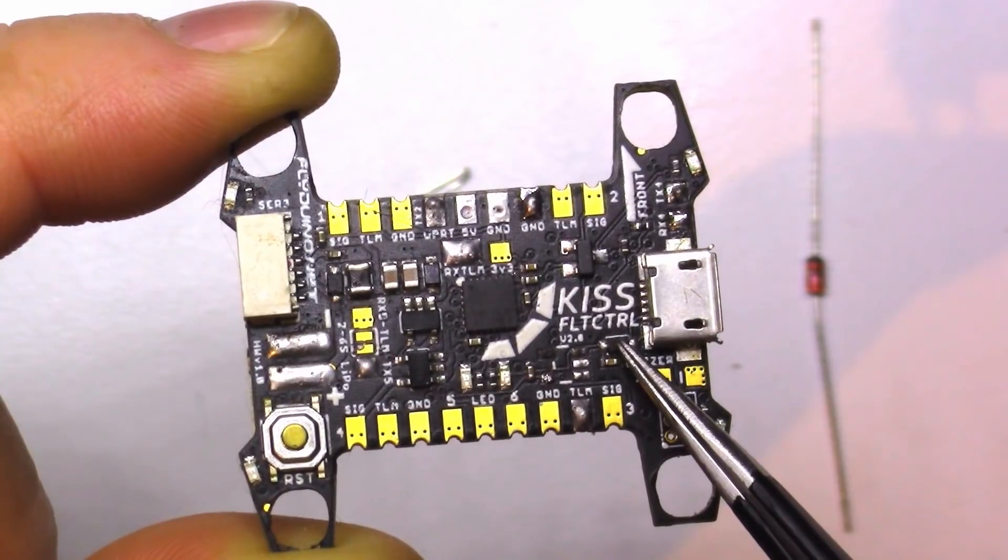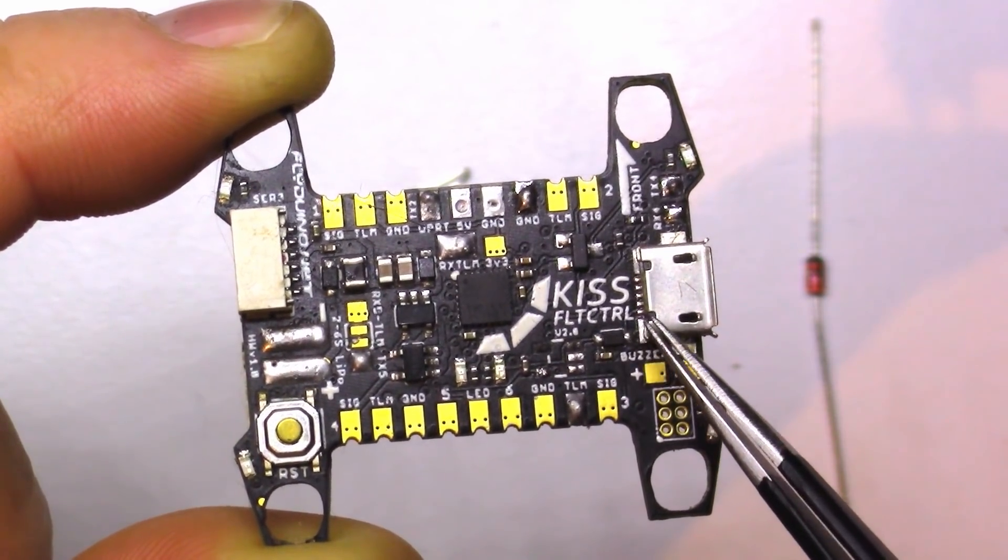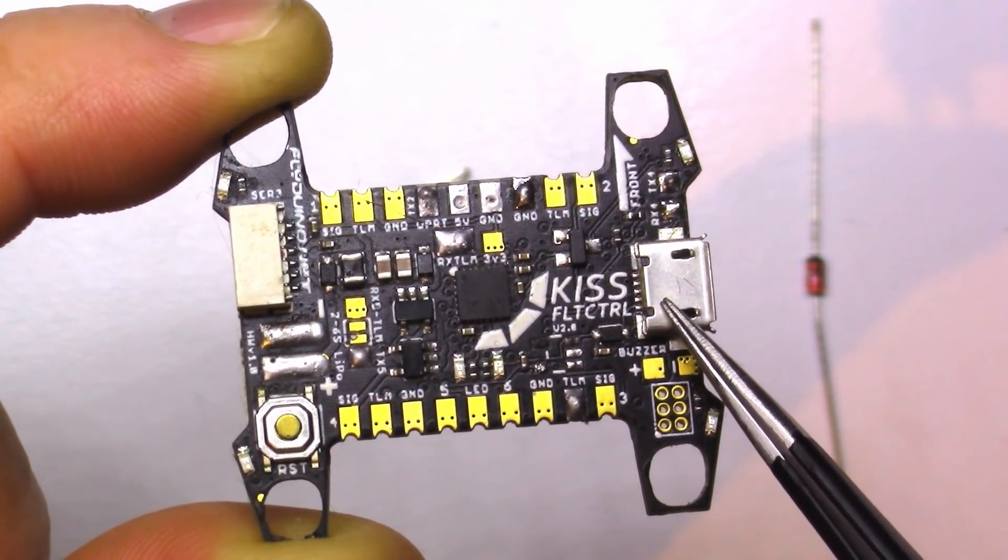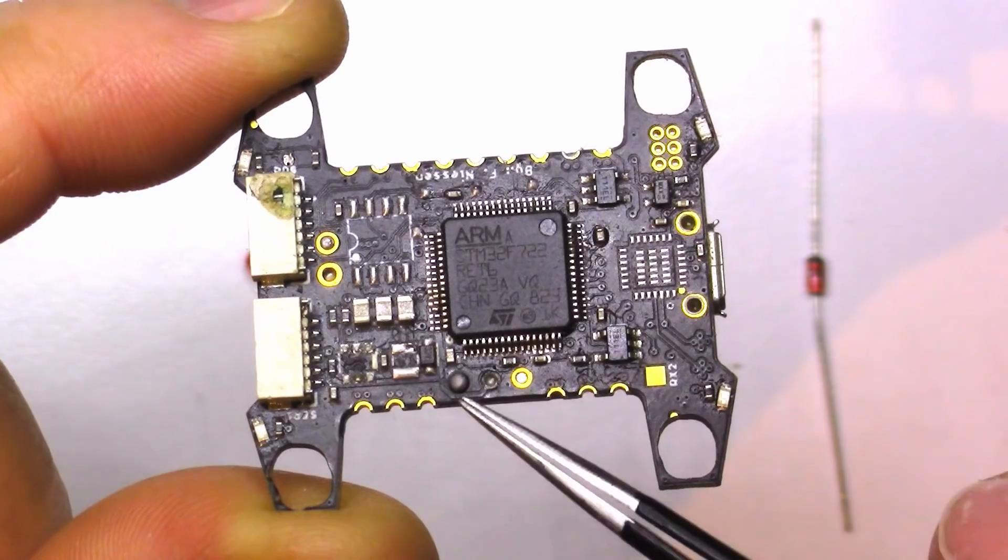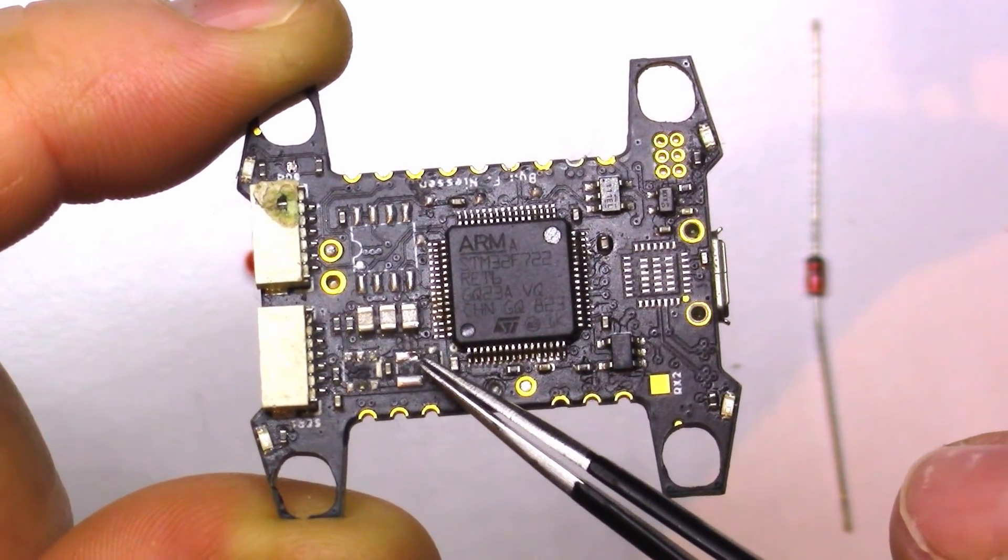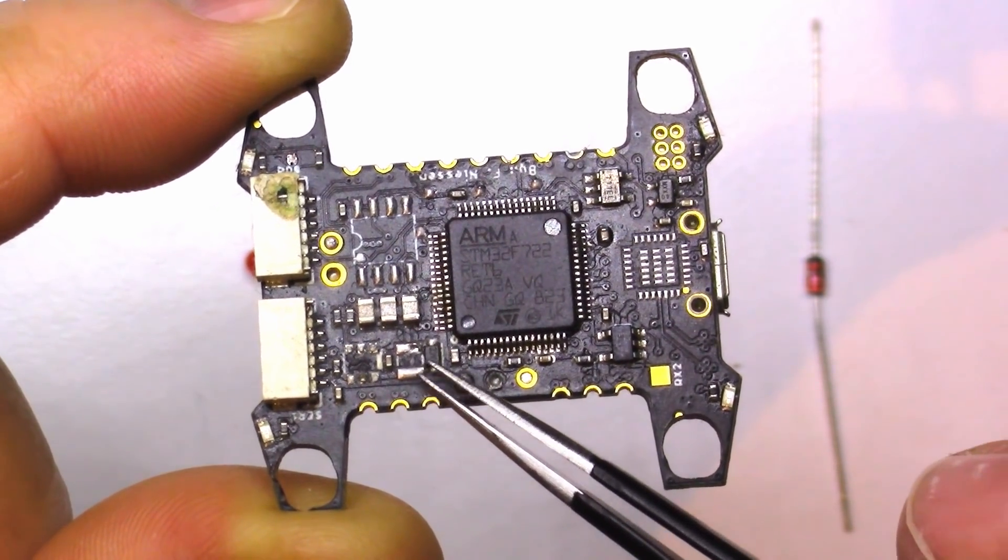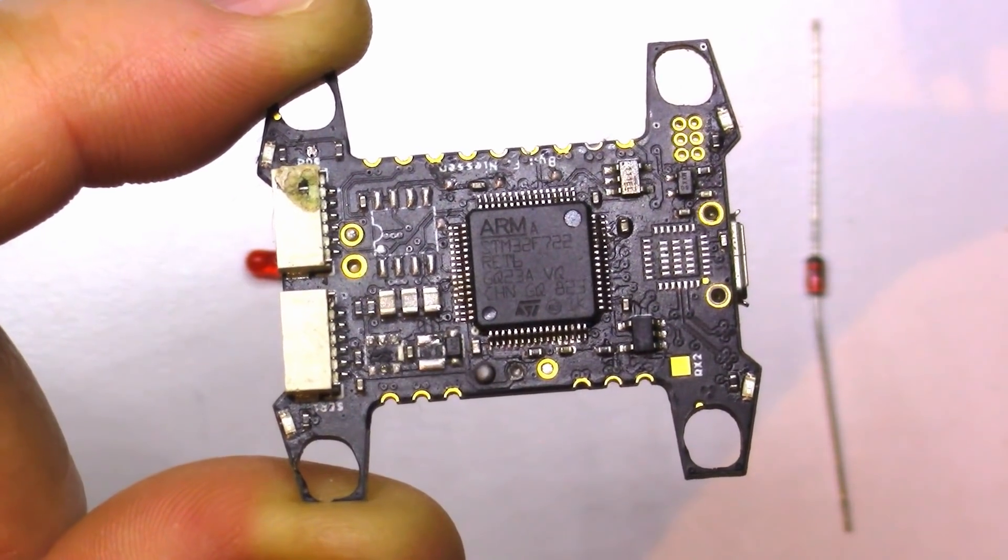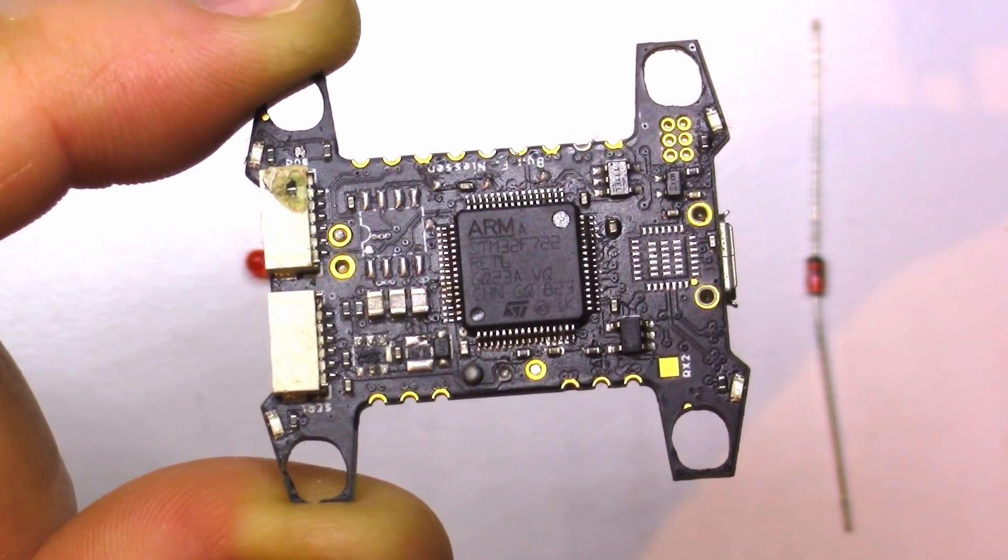On the other side, we can see here a diode which is separating the 5 volts coming from the 5 volt regulator that's connected to the LiPo. Going to another flight controller, here is a DYS flight controller.